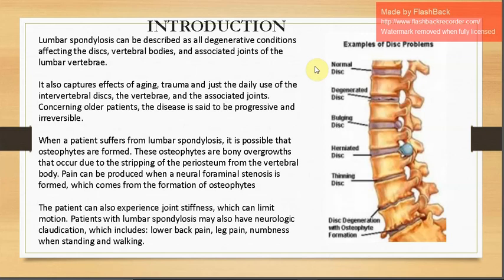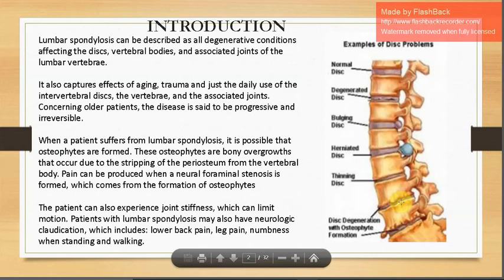Osteophytes form when there is erosion of the bony surfaces and the underlying subchondral bone is exposed. Patches of exposed subchondral bone are called eburnation. With the subchondral bone exposed, there will be pain and initiation of new bone formation, which develops into bony projections or spurs known as osteophytes. The patient can experience joint stiffness — that is, limited range of motion.